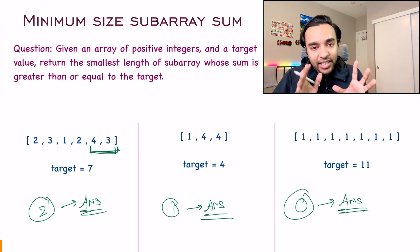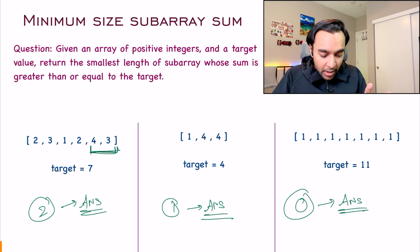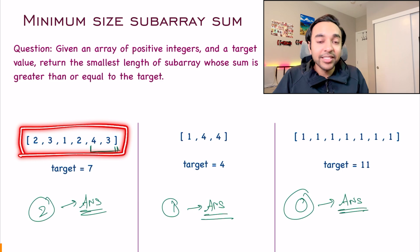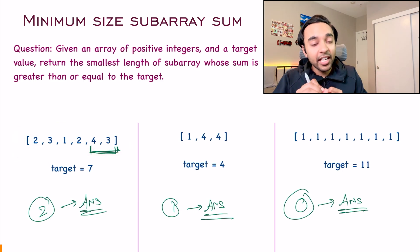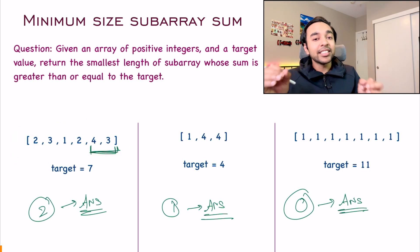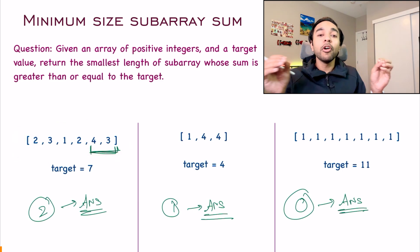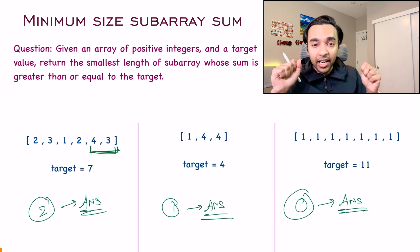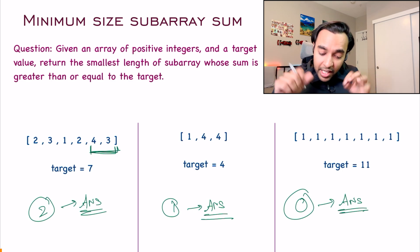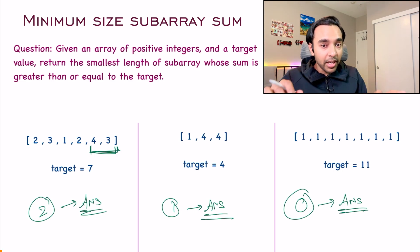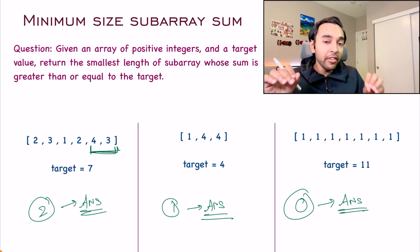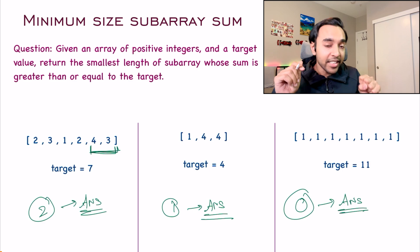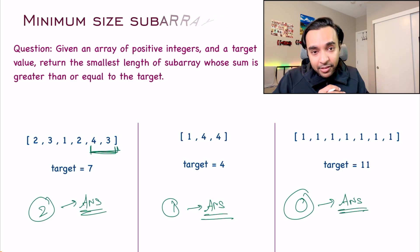So this is the basic crux of the problem. You have to identify a sub-array within an array such that the sum of its elements is greater than or equal to the target. If you now feel that you have understood the problem statement even better, feel free to first try it out. Otherwise, let us dive into the solution.